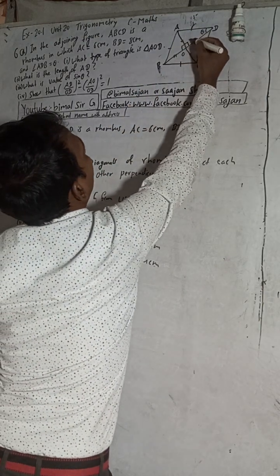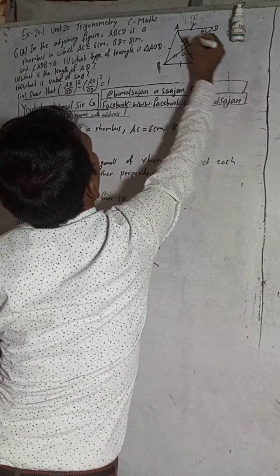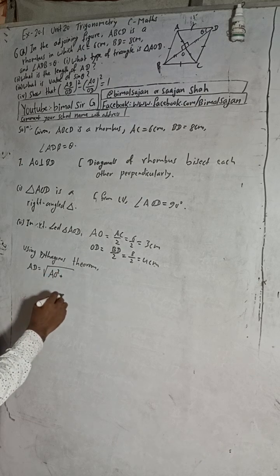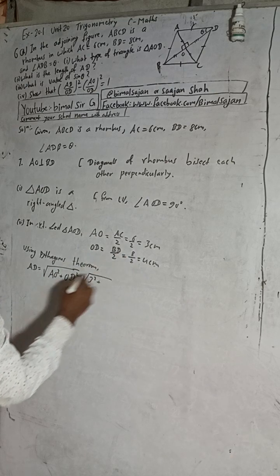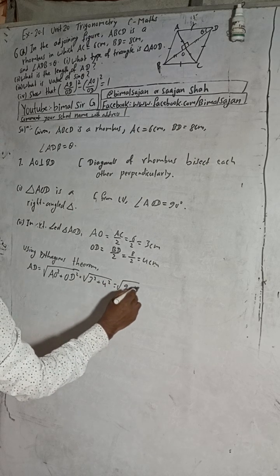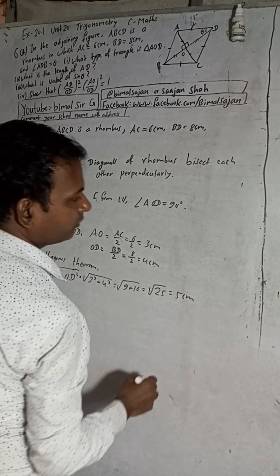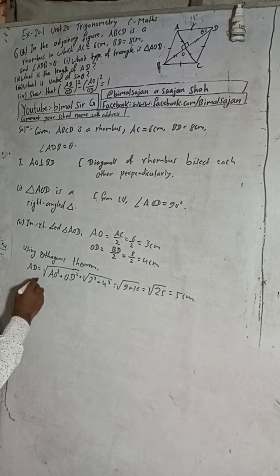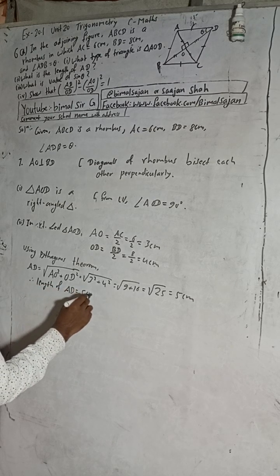AD is the hypotenuse, so AD equals the square root of AO squared plus OD squared. AO is 3, so 3 squared is 9; OD is 4, so 4 squared is 16. Therefore AD equals the square root of 9 plus 16, which is the square root of 25, equal to 5 cm. Therefore, the length of AD is equal to 5 cm.